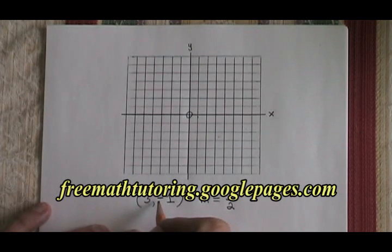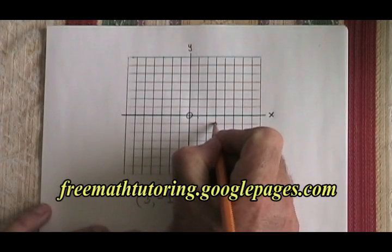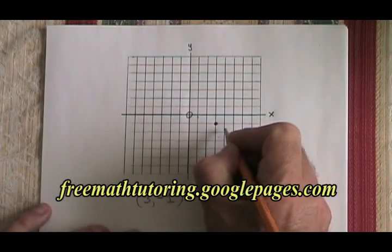First thing I'm going to do is graph my starting point. Here I have 3, negative 1. 3, negative 1 is right here. So I put a dot and I identify the point.